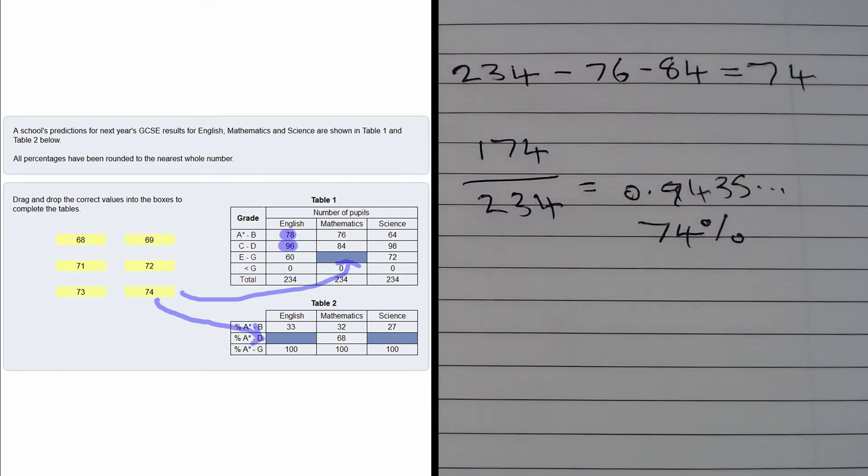Finally, we do the same for science. We have 64 plus 98 pupils who got between an A* and a D, which gives us 162 pupils.